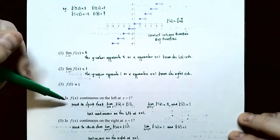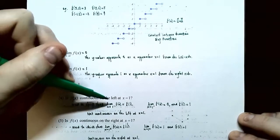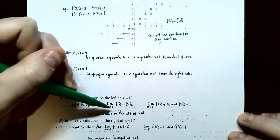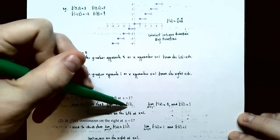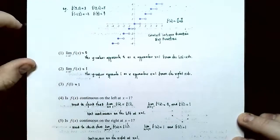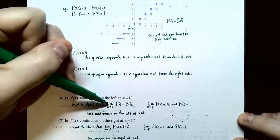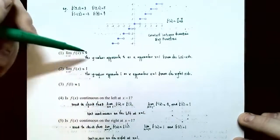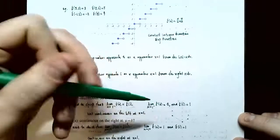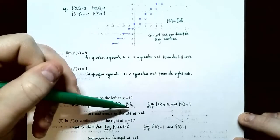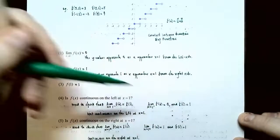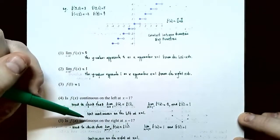Number 4: Is the function continuous on the left at x equals 1? We need the limit as x approaches 1 from the left to equal f(1). The left-hand limit was 0, but f(1) equals 1. Since these are not equal, the function is not continuous on the left side of x equals 1.